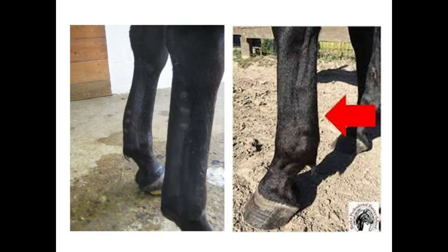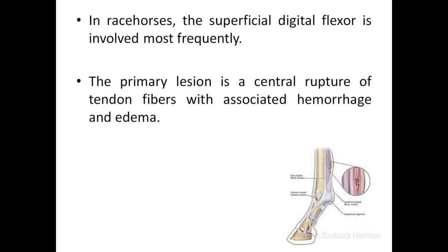These pictures show horses with bow tendon. The arrow represents the site of the lesion. You can see the deformity very clearly — there is swelling of the tendon on the ventral aspect of the limb. In racehorses, the superficial digital flexor is involved most frequently. The primary lesion is a central rupture of tendon fibers with associated hemorrhage and edema.